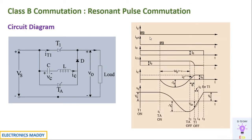We will be looking at the waveforms. This is the gate pulse given to thyristor 1, and this is the gate pulse given to the auxiliary thyristor. These are the expected waveforms. We are not going to concentrate on each and every waveform — we are only looking at the point when the thyristor is turned off. The voltage across the thyristor is one of the most important aspects that we are going to simulate in MATLAB.